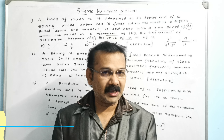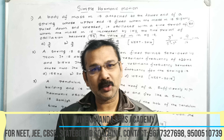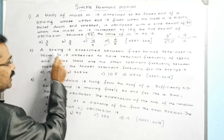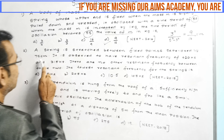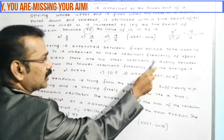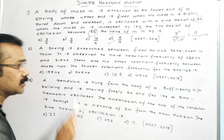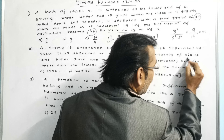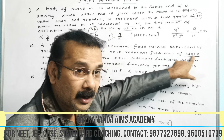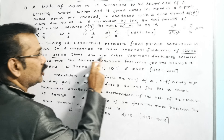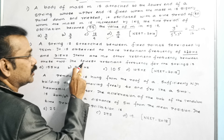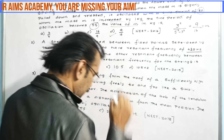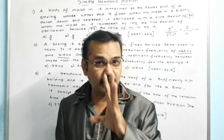We got the answer for the first question within a fraction of seconds. Let us move on to the second magical trick in the lesson of Simple Harmonic Motion. See the second question: a string is stretched between fixed points separated by 75 centimeters. It is observed to have resonant frequencies of 420 Hz and 315 Hz. There are no other resonant frequencies between these two. The lowest resonant frequency for the string has four options.